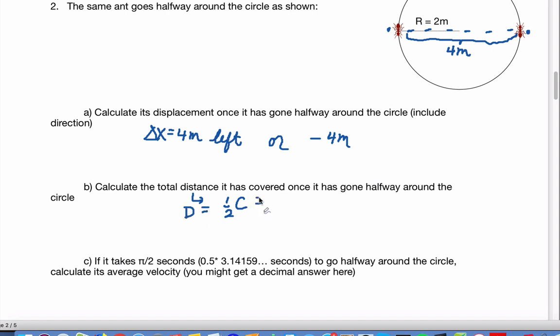That's going to be one half the circumference, which is going to be one half times two pi r. That's going to end up being pi times two, so that's going to be two pi.